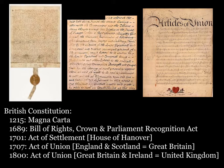Britain's empire — after 1800 it was officially the United Kingdom — did not have one governing document, but rather a series of parliamentary acts that, together, serve as a constitution. The first of these documents, the Magna Carta, was adopted in 1215, but it was really the 1689 documents, the English Bill of Rights and the Crown and Parliament Recognition Act, which dictated parliamentary sovereignty and truly limited the rights of the English monarchs.